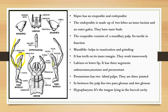The outer lobe is called the galea. This is the galea. Then there is the endopodite and the palp. These are the test parts. The exopodite consists of many joints and is tactile in function.